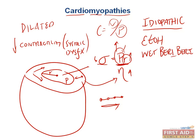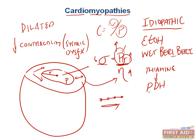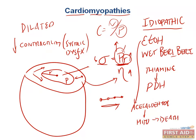Both alcohol and beriberi deprive the myocyte mitochondria of thiamine, which is crucial for the function of pyruvate dehydrogenase. Without thiamine, you cannot make sufficient ATP because pyruvate dehydrogenase doesn't work well, and you need ATP to keep those myocytes contracting. In addition, acetaldehyde — one of the breakdown products of ethanol — is a direct mitochondrial toxin that disrupts the connection cytochrome C has to the inner mitochondrial membrane. If you liberate cytochrome C, you set off the apoptotic pathway.